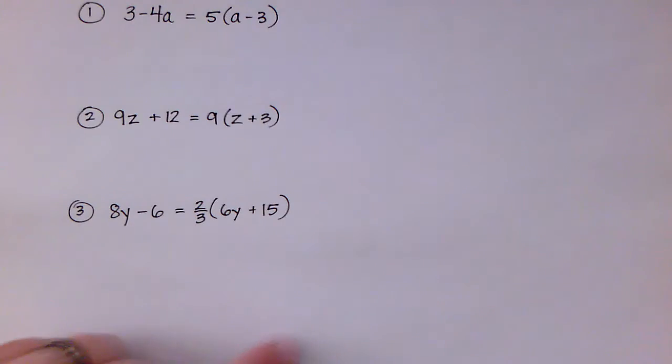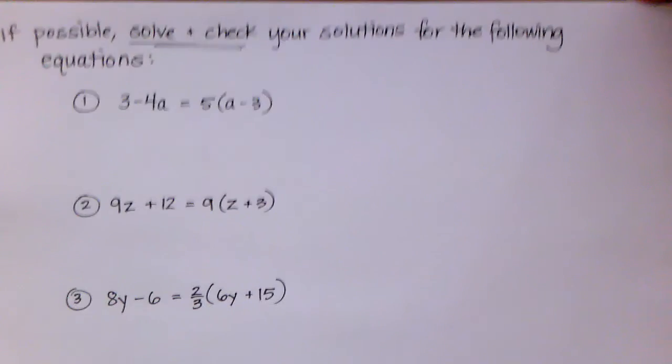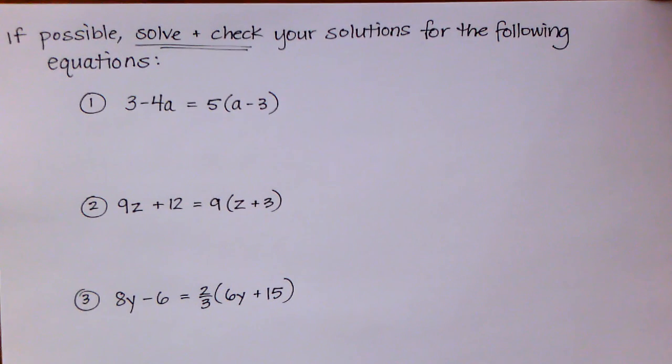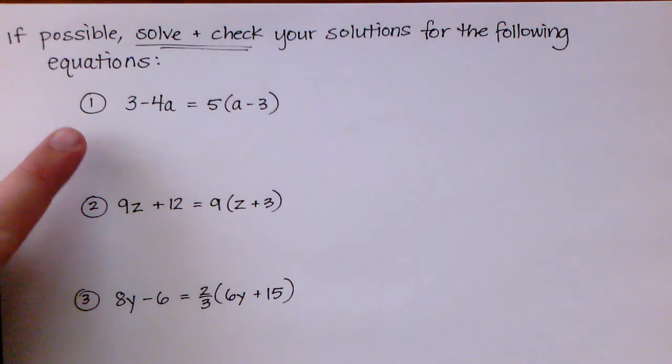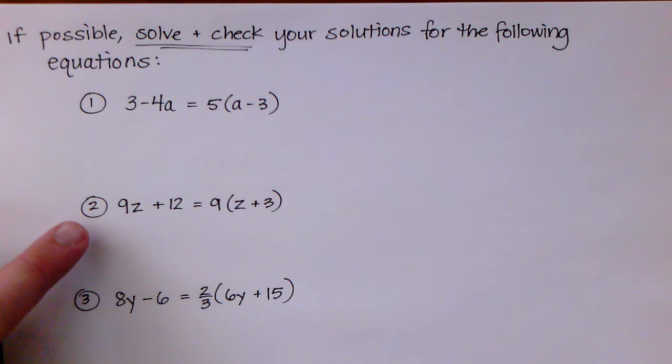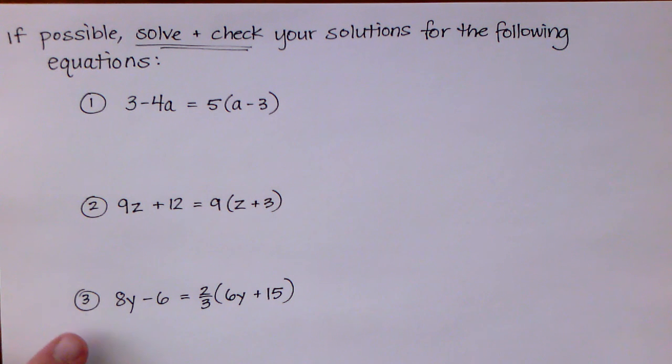So to conclude, on your own, if possible, I want you to try to solve and check your solutions for these three equations. First one is 3 minus 4a equal to 5 times the quantity of a minus 3. The second one is 9z plus 12 is equal to 9 times the quantity z plus 3. And the last one is 8y minus 6 is equal to 2 thirds times the quantity of 6y plus 15. So come prepared with any questions that you might have when you come back to class.